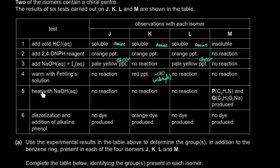Test number 5: heating with aqueous sodium hydroxide gives no reaction with J, K and L, but M is broken down into smaller parts — hydrolysis takes place. Specifically, we have alkaline hydrolysis. M is a nitrogen compound that is not an amine but undergoes hydrolysis. Therefore it is an amide, because amides undergo hydrolysis and are not basic — which is why M didn't react with cold acid.